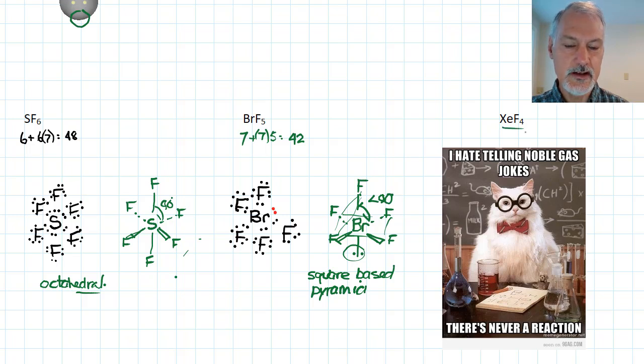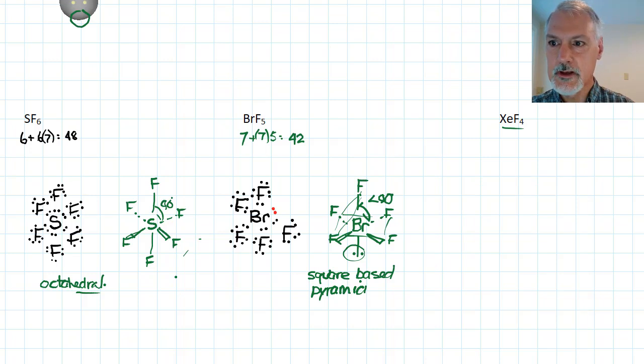My last compound I want to take a look at is xenon tetrafluoride. We've been taught in earlier studies that the noble gases don't tend to react. In 1963, they were able to synthesize a compound with a noble gas. And this was the first one that they were able to do that with. So xenon brings eight electrons. And fluorines will bring 28 electrons. So I've got 36 in my picture. So I'll start with xenon here in the middle. And we'll put our four fluorines around it. Bonding site. Complete the octets. Now I've used 32 electrons at this point. I still have four more. So I'll give them here. Six domains.